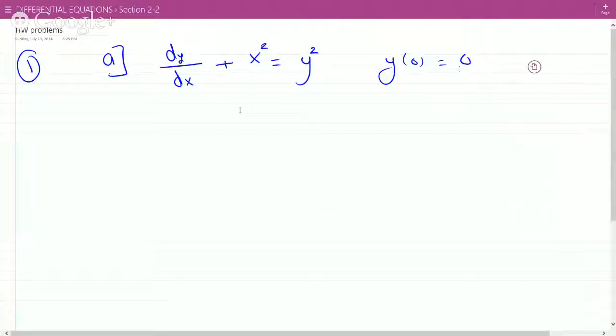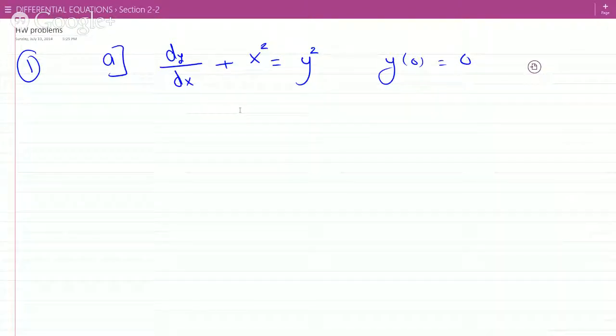So on this one, it's dy over dx plus x squared equals y squared, and the initial condition is (0, 0).